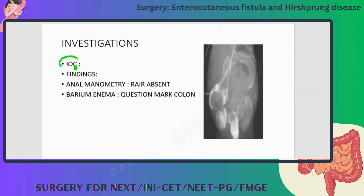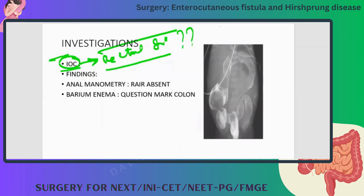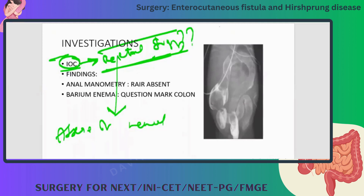The investigation of choice is rectal biopsy. Because there is absence of neural crest cells, once you take a biopsy and examine it, if there is absence of these cells it is confirmatory of Hirschsprung's disease. Anal manometry is also done — it shows absence of the recto-anal inhibitory reflex — but the investigation of choice remains rectal biopsy.